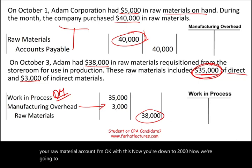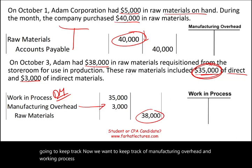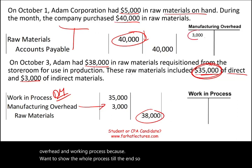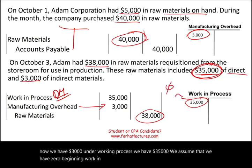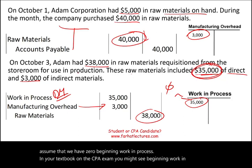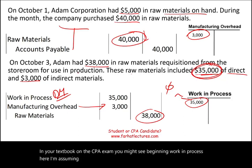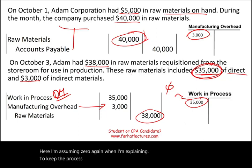We want to keep track of manufacturing overhead and work in process. Under manufacturing overhead, we now have $3,000. Under work in process, we have $35,000, assuming zero beginning work in process. In your textbook or on the CPA exam, you might see a beginning work in process balance, but here we're assuming zero to keep the process simple.